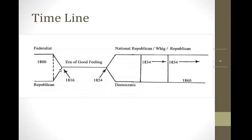By the time we get to 1816, the Federalist Party is history. It's one party — the Democratic-Republicans — until we get to the election after 1824 when Jackson is running for office. He is going to found the Democratic Party mainly in about 1825, and by 1828, when we get to the election of Jackson, we are going to see this new party emerge called the Democratic Party.